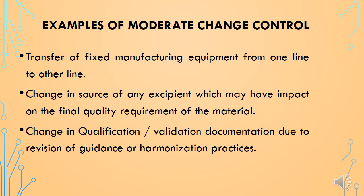Here are a few examples of moderate change controls. Transfer of fixed manufacturing equipment from one line to another line shall be categorized under moderate change controls. In the case of solid dosage forms, if we are shifting the fluidized bed dryer, compression machines, or coaters from one area to another line, this requires a relocation assessment for that equipment. In the case of injectables, if we are shifting fixed manufacturing tanks from one area to another, this shall be categorized under moderate change control. Change in source of any exhibit which may have an impact on the final quality of the material, and change in qualification or validation documentation due to revision of guidance or harmonization practices shall also be categorized under moderate change controls.